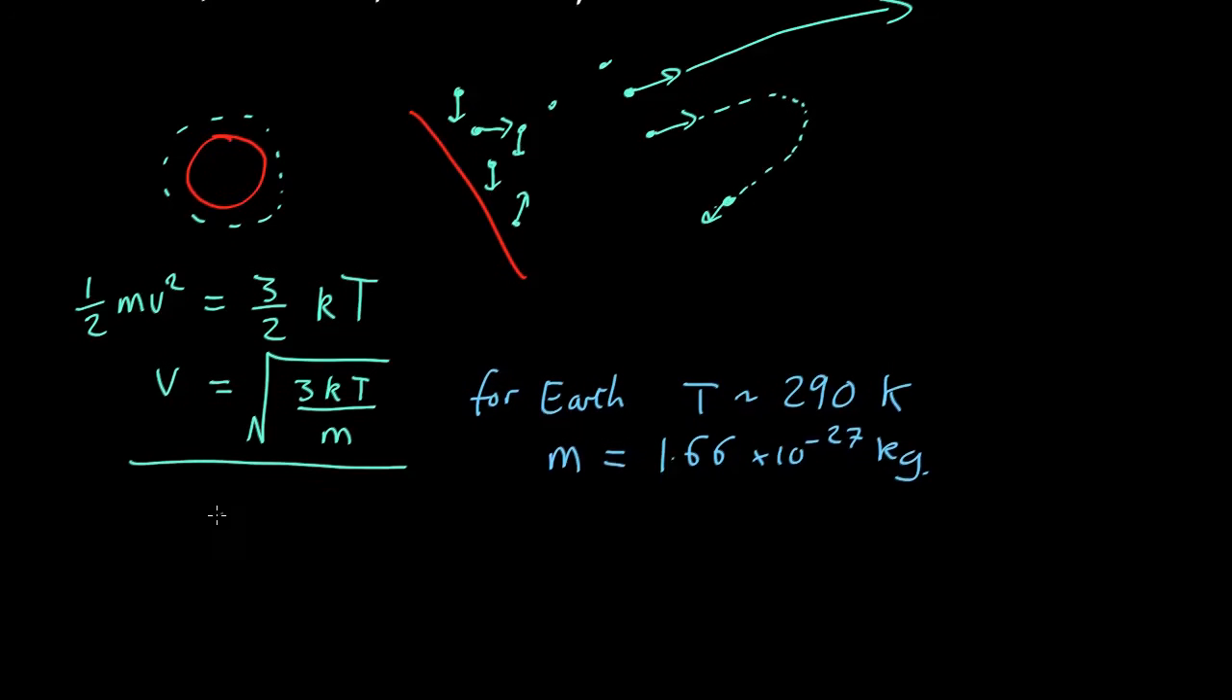Boltzmann's constant is 1.38 by 10 to the minus 23. Plug those all into here and we get a velocity of about 2.7 kilometers per second. Very fast. Your bullet might do 1 kilometer a second from a high velocity rifle.